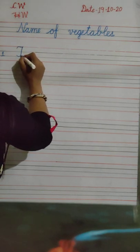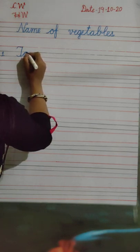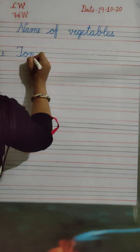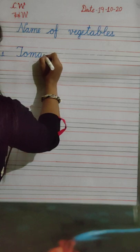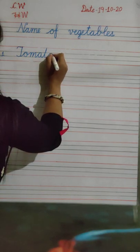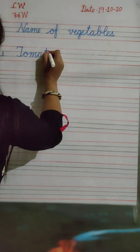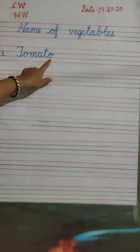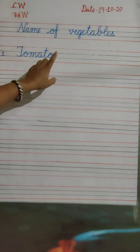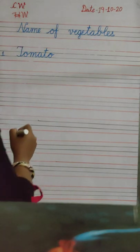T, O, M, A, T, O. Tomato. T, O, M, A, T, O. Tomato. Okay. And you are to write like me — in cursive writing and in proper lines. Okay students, next.